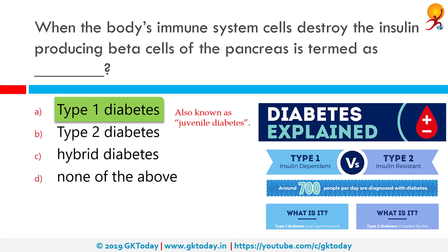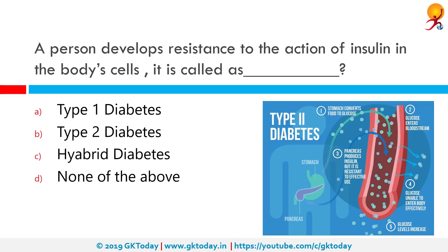The classic symptoms are frequent urination, increased thirst, increased hunger, and weight loss. Additional symptoms may include blurry vision, feeling tired, and poor wound healing. Symptoms typically develop over a short period of time. It is more common in children, hence it is known as juvenile diabetes.